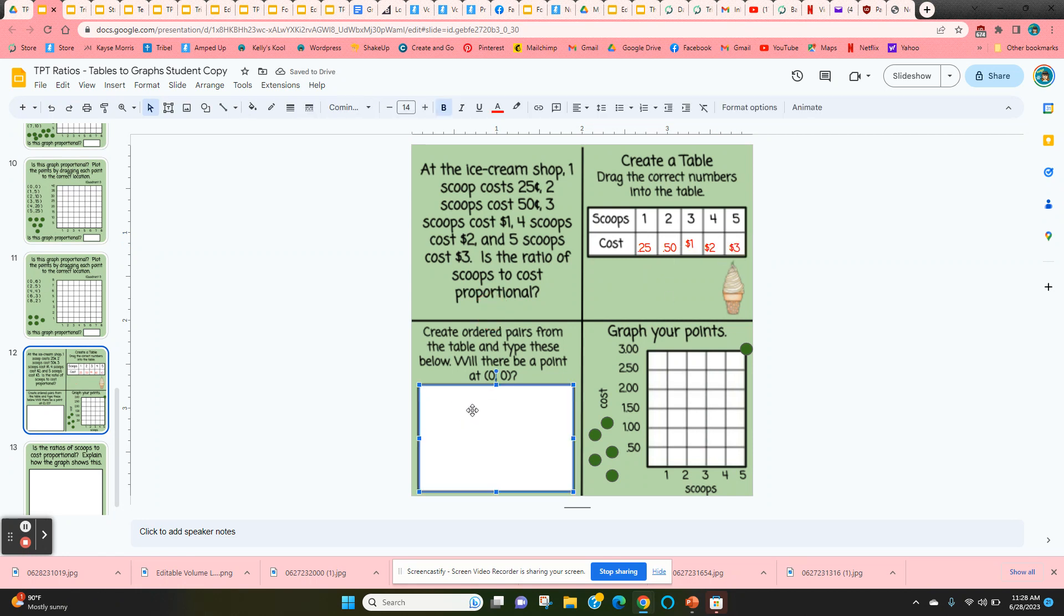So they just click and hold on the edge here and then they can move these into place. Now that they have the table finished, they come down here and they're going to create ordered pairs. So what they want to determine first of all is, is there a point at zero, zero? Well, if they look at this, if there were zero scoops, how much would it cost? Zero dollars. So yes, there is a point at zero, zero. So they're just going to type in all of the ordered pairs: 1, 25 cents; 2, 50 cents; 3, a dollar; 4, 2; and 5, 3. They get these all from the table.